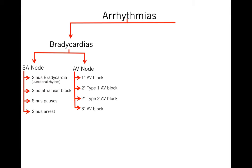First, we'll talk about some bradycardia ECGs. Bradycardias are related to either the sinus node or the AV node. Those relating to the sinus node are either sinus bradycardia, sinoatrial exit block, sinus pause, or sinus arrest. Those relating to the AV node are either first-degree AV block — this is actually a misnomer and does not cause bradycardia and is not true block — it's simply prolongation of the PR interval.